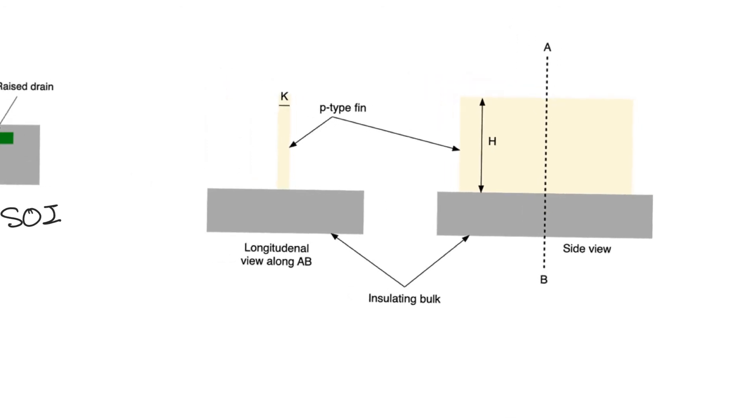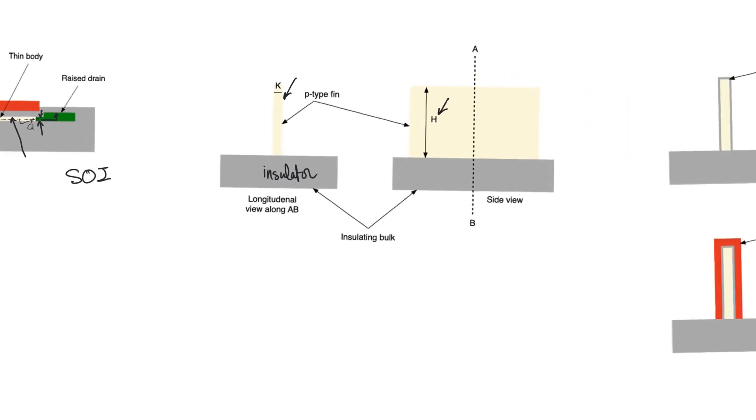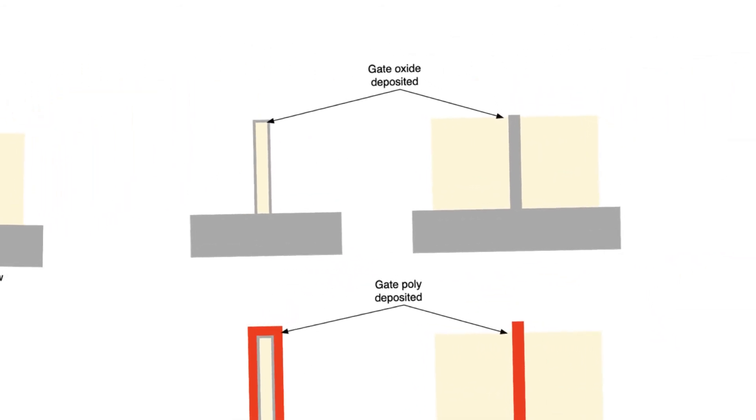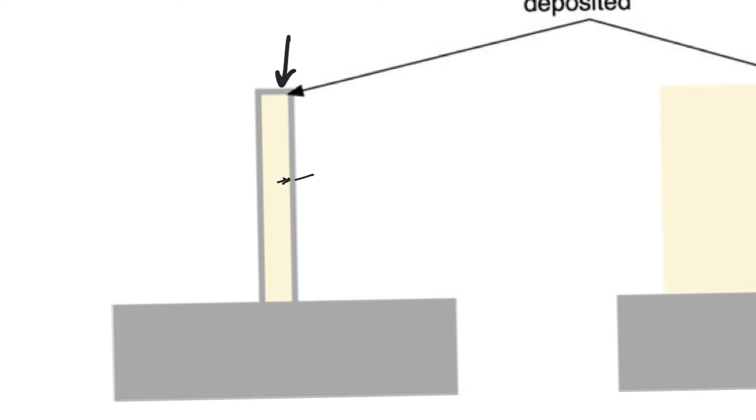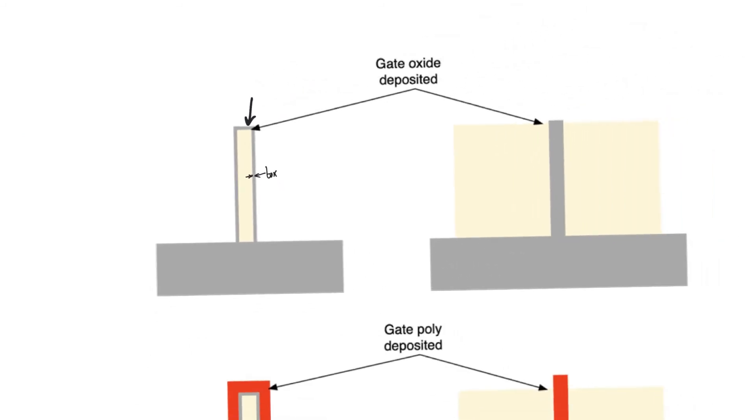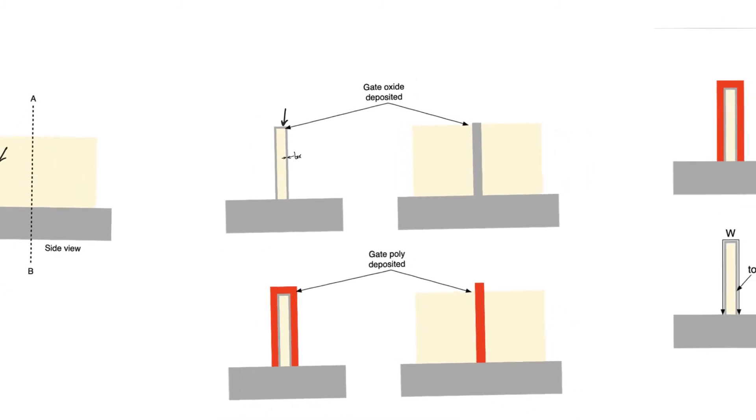So in the FinFET we start again with an insulating base, so this is an insulator, and then we create a thin fin and this fin is of the body type we want to create. So for N-MOS it will be P-type, for P-MOS it will be N-type, and we create a thin fin of the appropriate type. This fin is going to have a height of H and a thickness of K. Now the second step is to grow a layer of oxide on part of this fin. This oxide is going to be very thin and specifically the thickness of this oxide is going to be T-ox.